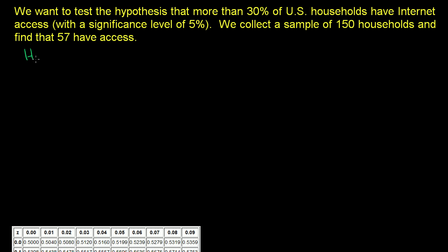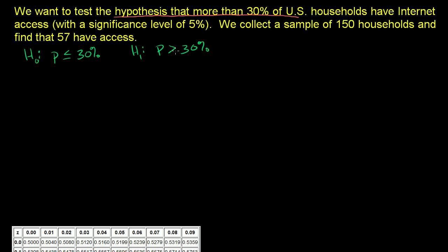Our null hypothesis is that the proportion of US households that have internet access is less than or equal to 30%. Our alternative hypothesis is what our original hypothesis actually is — that the proportion is greater than 30%. We're testing the alternative hypothesis.